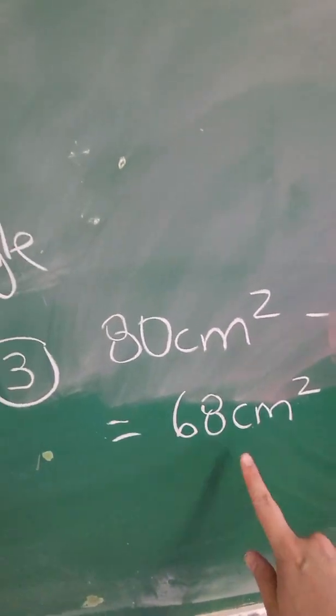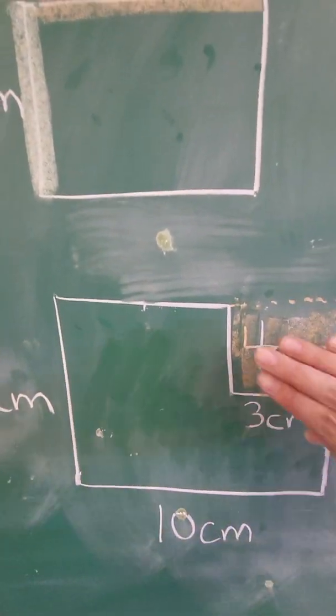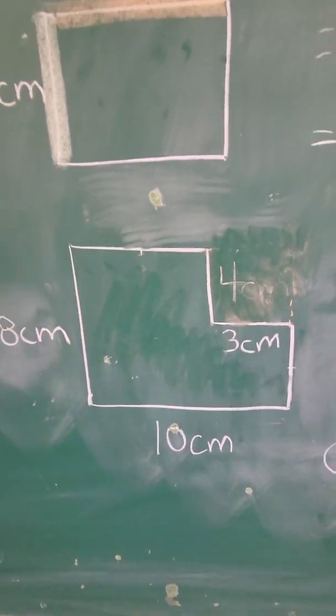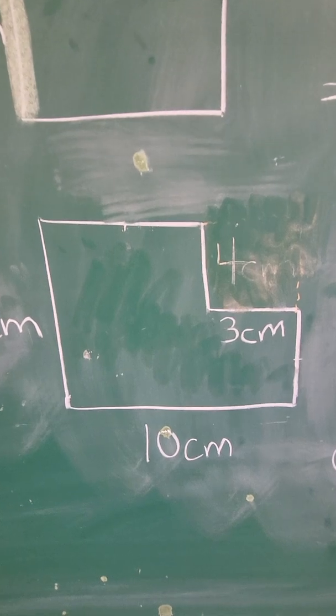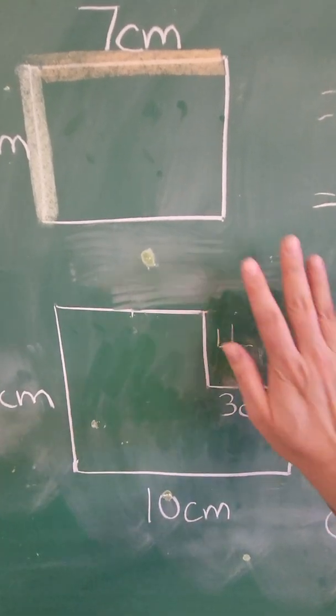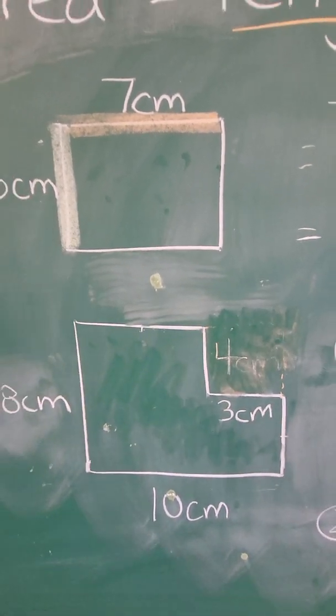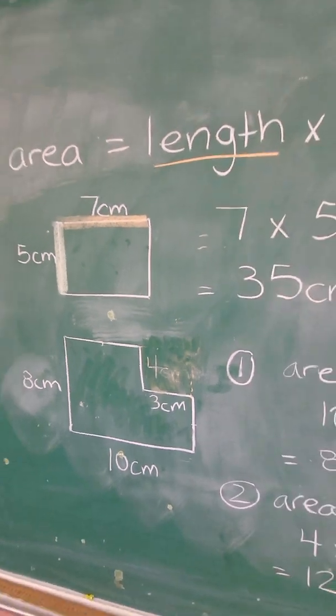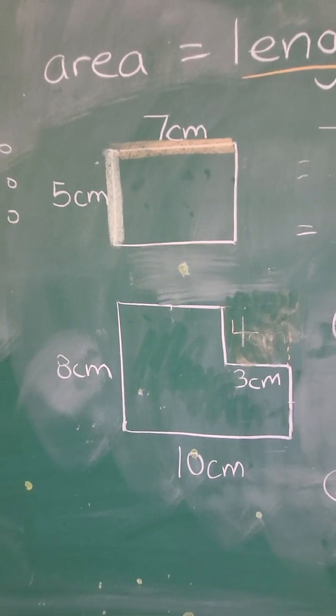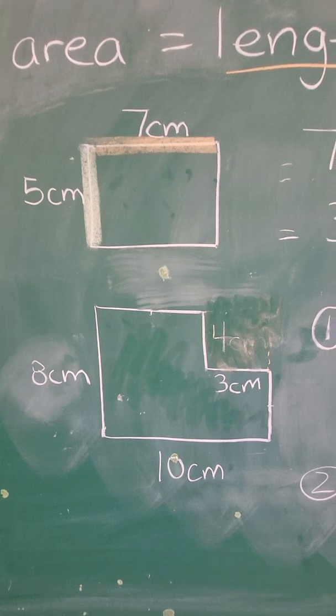And then I get 68 centimeters squared. So the area of this whole thing here, not this, this has been cut off. This was the shape, a weird looking L thing. The area of that is 68 centimeters squared by finding the area of the whole thing, finding the area of the little bit that's been cut off, and taking it away. So that is area of rectangles and area of irregular shapes that are similar to rectangles and squares. Hope that helps. Thanks for watching.